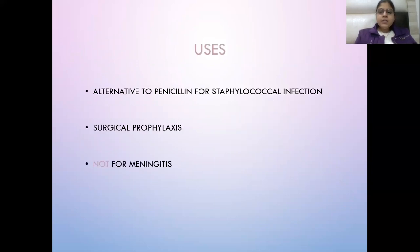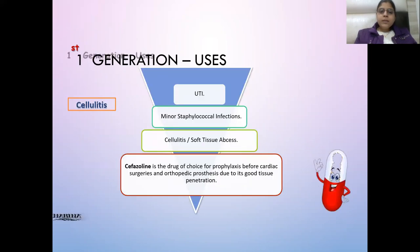Uses of first generation cephalosporins: they can be given in staphylococcal infections, surgical prophylaxis, but not for meningitis. They can be given in UTI, cellulitis, minor staph infections, and soft tissue infections. Cefazolin is the drug of choice for prophylaxis before cardiac surgeries and orthopedic procedures due to its good tissue penetration.